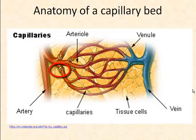A capillary bed forms a maze of capillary vessels that lies between an arteriole and a venule. When sphincter muscles are relaxed, the capillary bed is open and blood flows through the capillaries. When sphincter muscles are contracted, blood flows through a shunt. As blood passes through a capillary to the tissues, it gives up its oxygen. Therefore, blood goes from being oxygen-rich in the arteriole, shown in red, to being oxygen-poor in the vein, shown in blue.